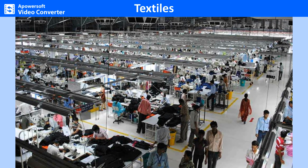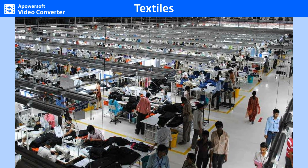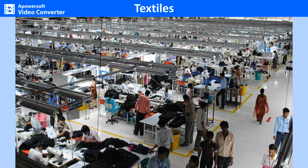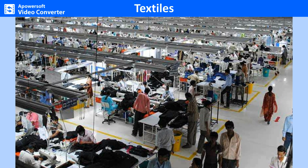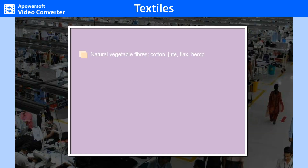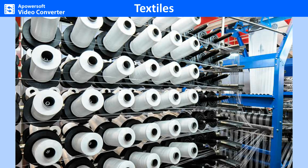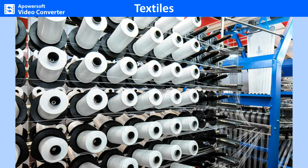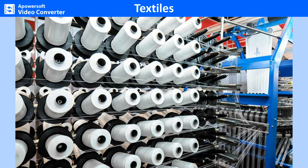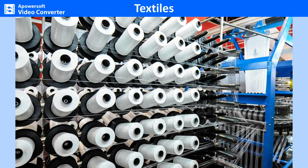Textiles. The textile industry is one of the oldest industries in the world. It includes textiles made from three types of fibers: natural vegetable fibers such as cotton, jute, flax, and hemp; natural animal fibers such as wool and silk; and synthetic fibers such as nylon, polyester, acrylic and rayon. Textiles are manufactured not just for clothing, but for furnishing, packaging and other industrial uses.